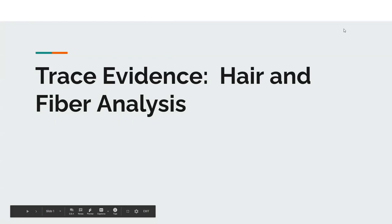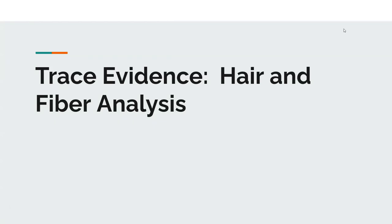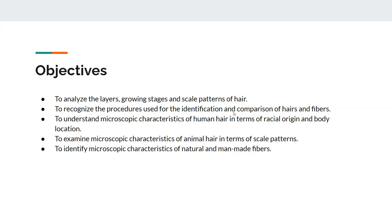This is our lecture video on hair and fiber analysis in the forensic science lab. We're going to analyze the layers, growing stages, and scale patterns of human hair, look at identification and comparison of hairs and fibers, understand the microscopic characteristics of human hair in terms of racial origin and body location, the microscopic characteristics of animal hair in terms of their scale patterns, and then identify microscopic characteristics of natural and man-made fibers.